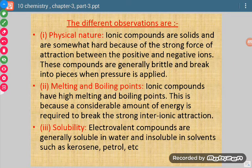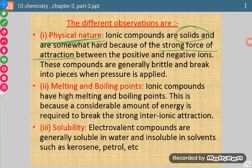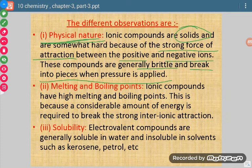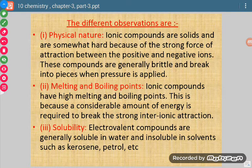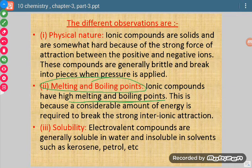The physical nature of ionic compounds: they are solids with a strong force of attraction between positive and negative ions. These compounds are generally brittle and break into pieces when pressure is applied, because of their ionic crystal structure. The very first property to note is that ionic compounds are solids.